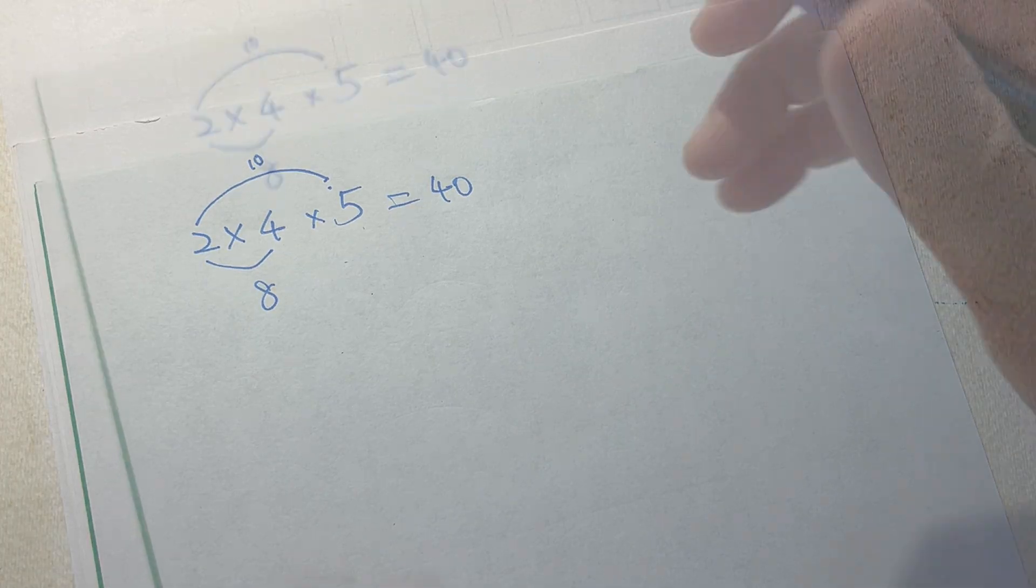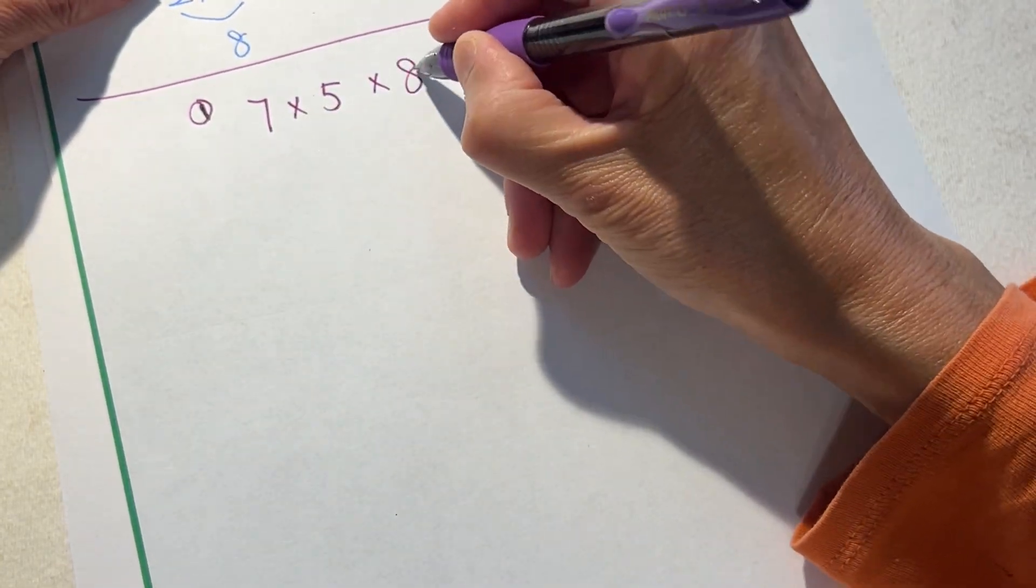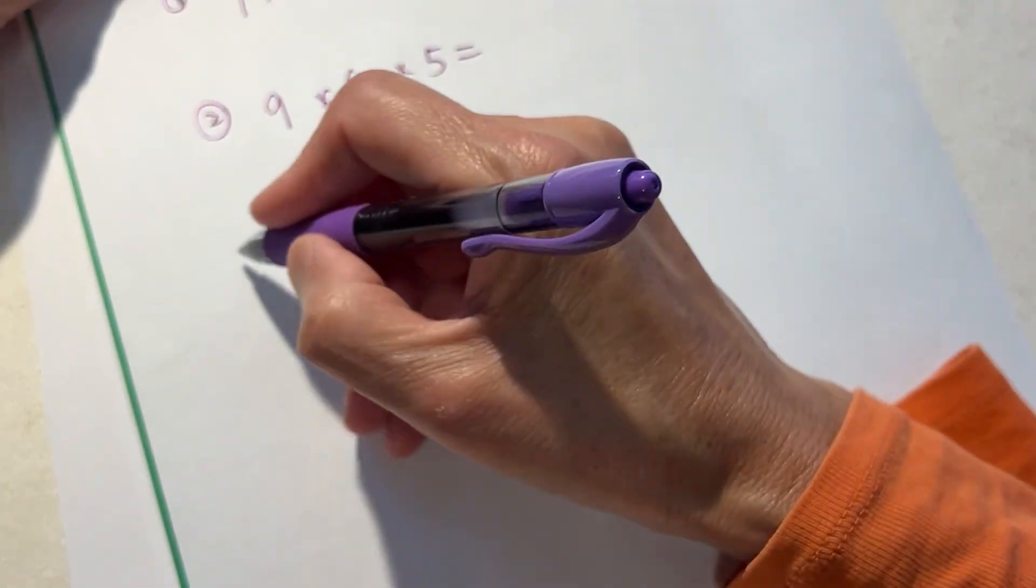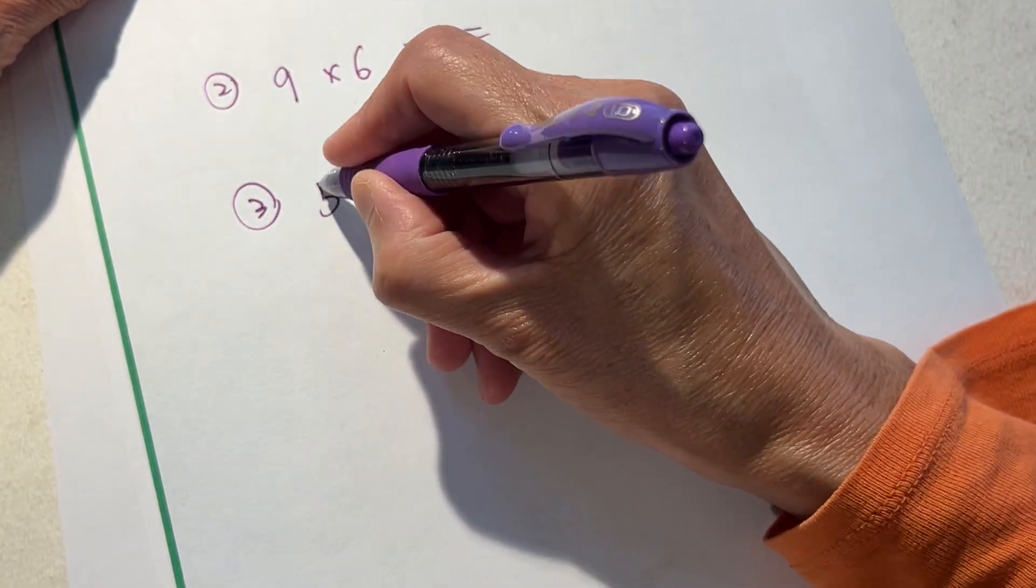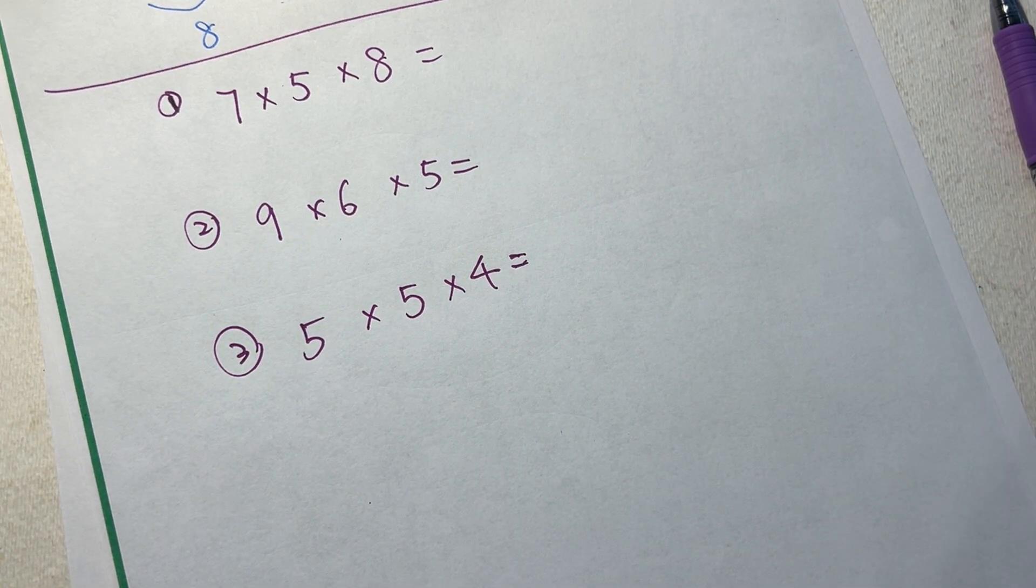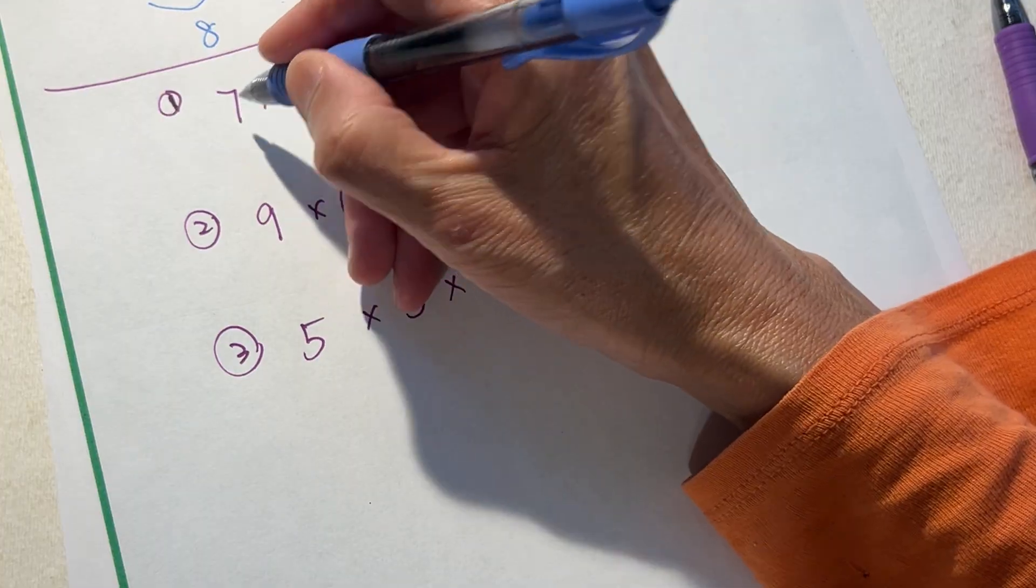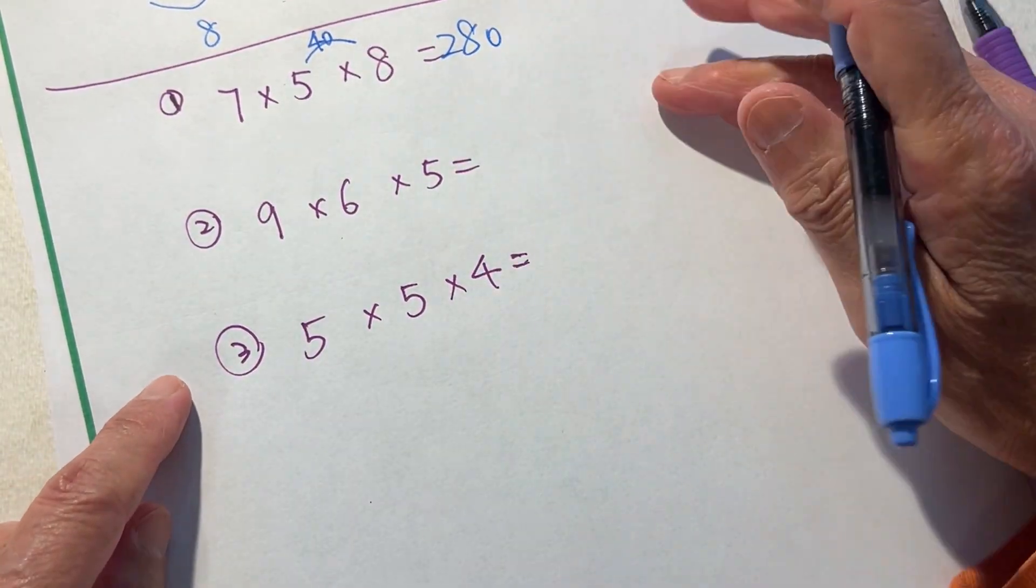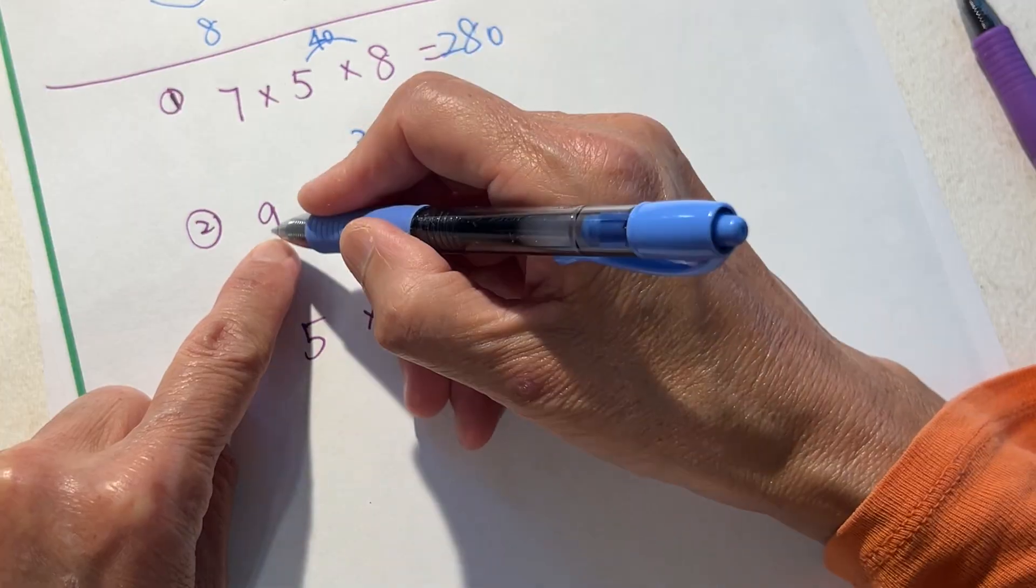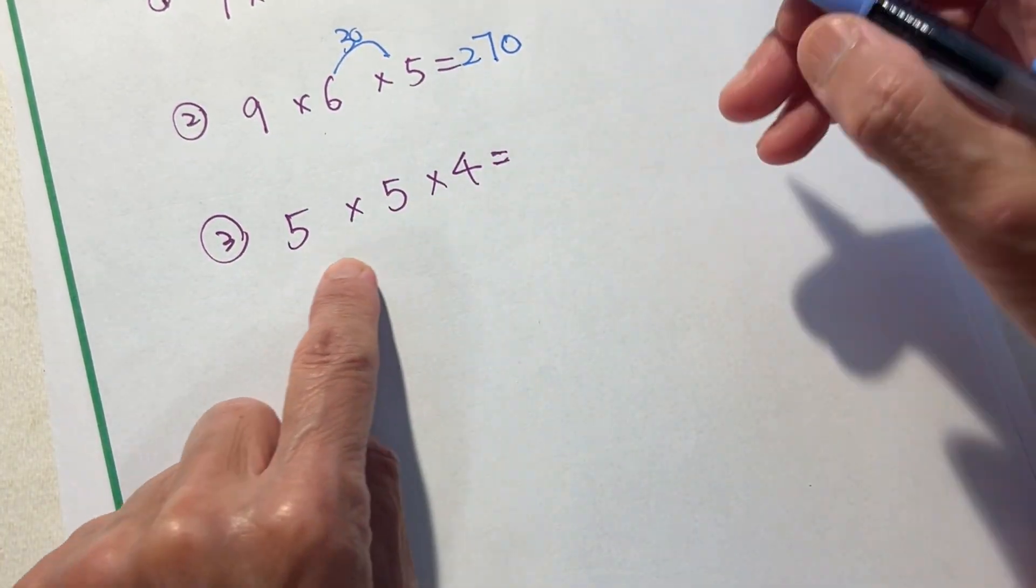Another way of doing it. Now I will do multiplication. Okay, so number one: 7×5×8, 9×6×5, 5×5×4. Okay, 5×8 is 40, 4, 7, 28, one zero coming back. 6×5, 30, 3×9, 27, one with one zero, not forgetting.